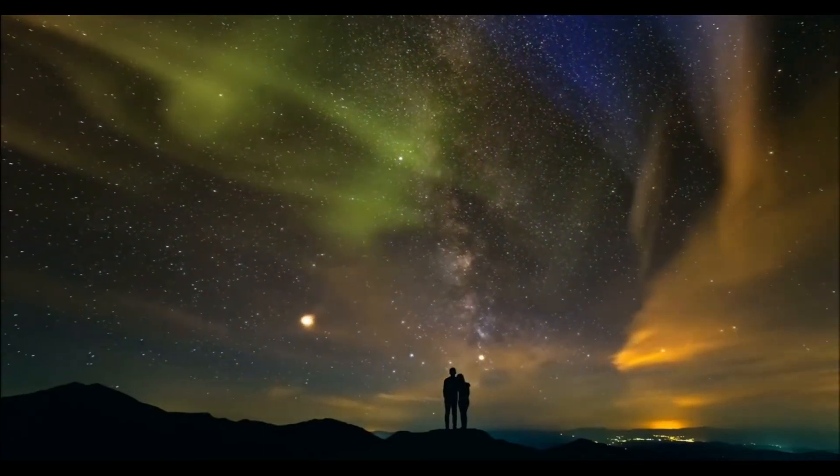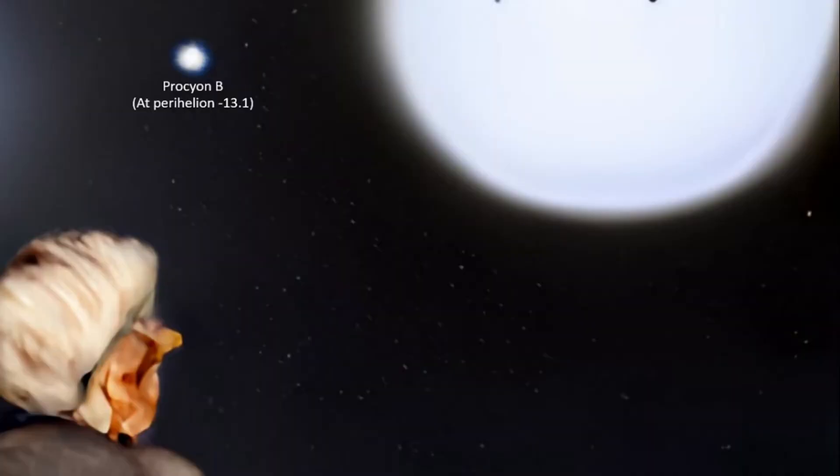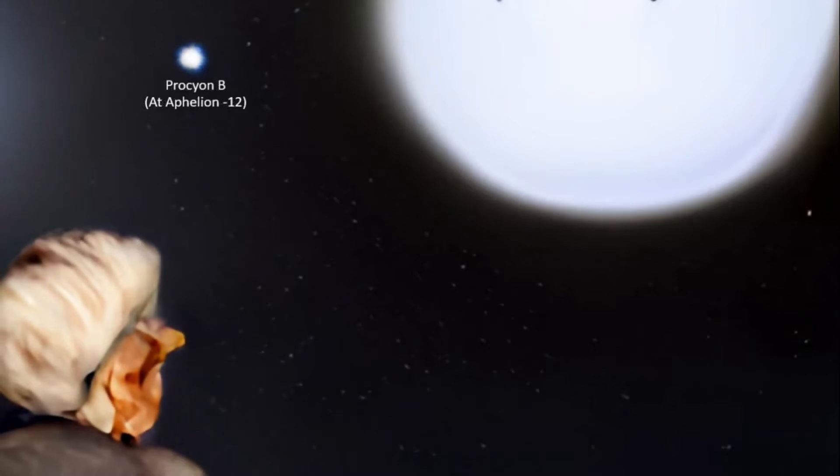Looking from the principal star, Procyon B at perihelion, or closest approach, would shine at just minus 13.1 which is roughly twice the brightness of the full moon, and at aphelion or most distance it would dip to almost minus 12 which is only half the brightness of the full moon, perhaps a little more.